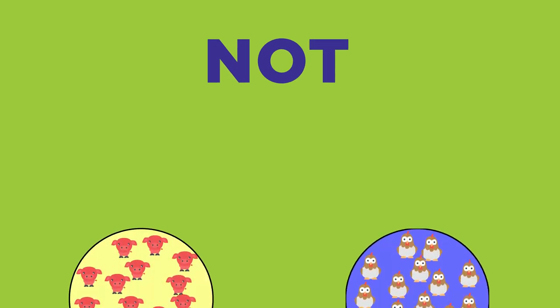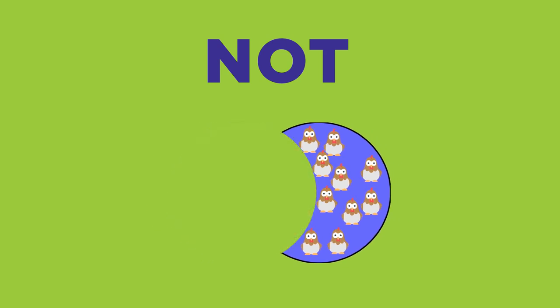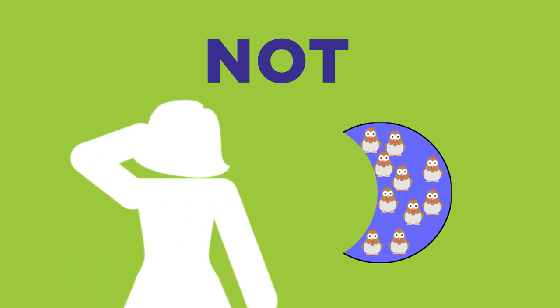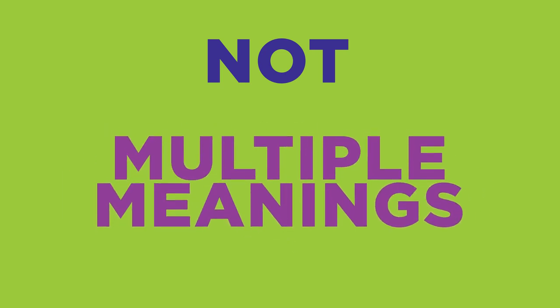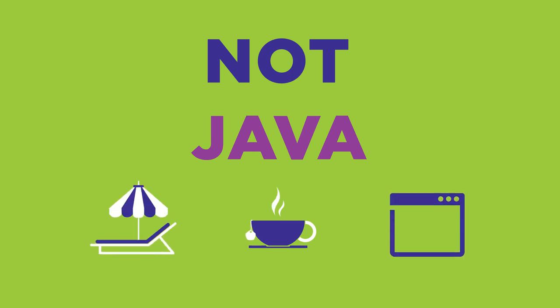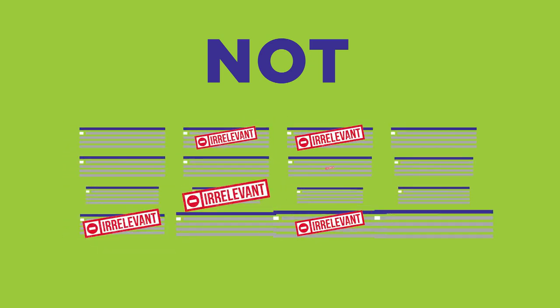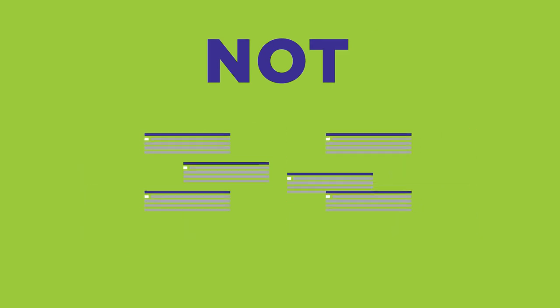The final Boolean operator is NOT. Here's how it works: NOT tells the system that you want one search term and NOT the other in your search results. You may not even think about the fact that your term may have multiple meanings. For example, when you search for JAVA, are you expecting results for coffee, an island, or a computer program? If you're getting a lot of results that have nothing to do with your topic, use a second term with NOT to eliminate results that mention the second term.